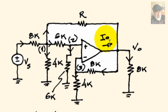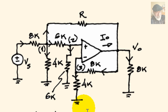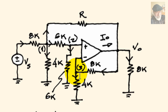We begin by choosing nodes. The reference node has been chosen for us down here. We identify nodes 1, 2, and 3, and of course the output node, for which we will not be writing a KCL equation.